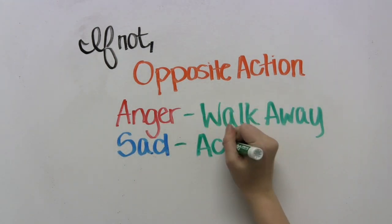Acting on sadness is not helpful for Marie, and crying makes Marie feel worse. So now we need to identify the opposite of her action urges.